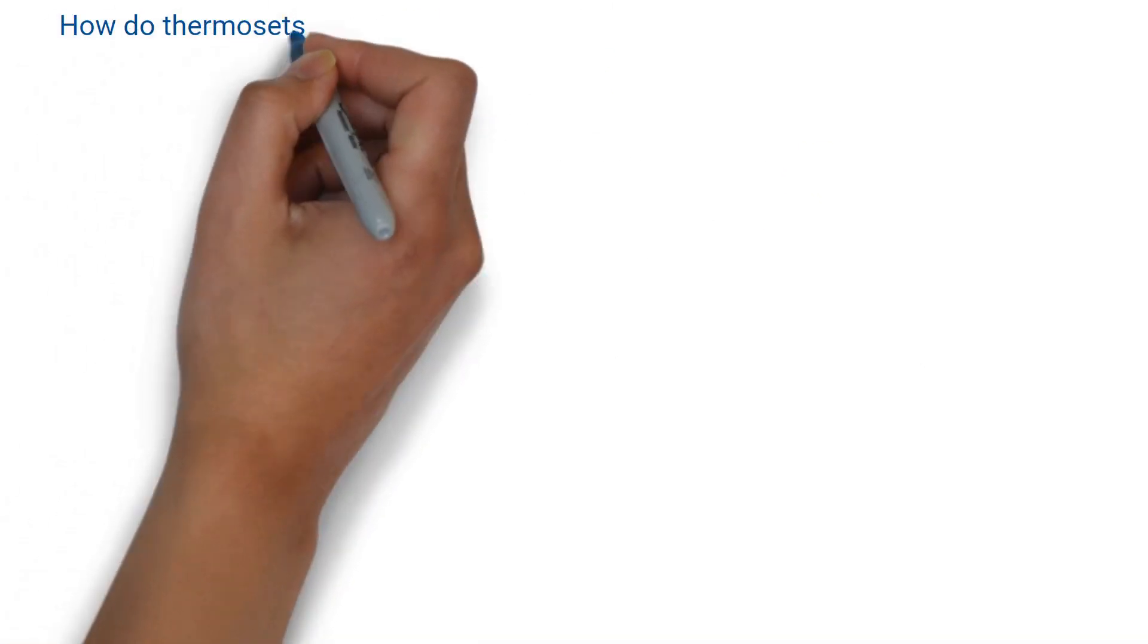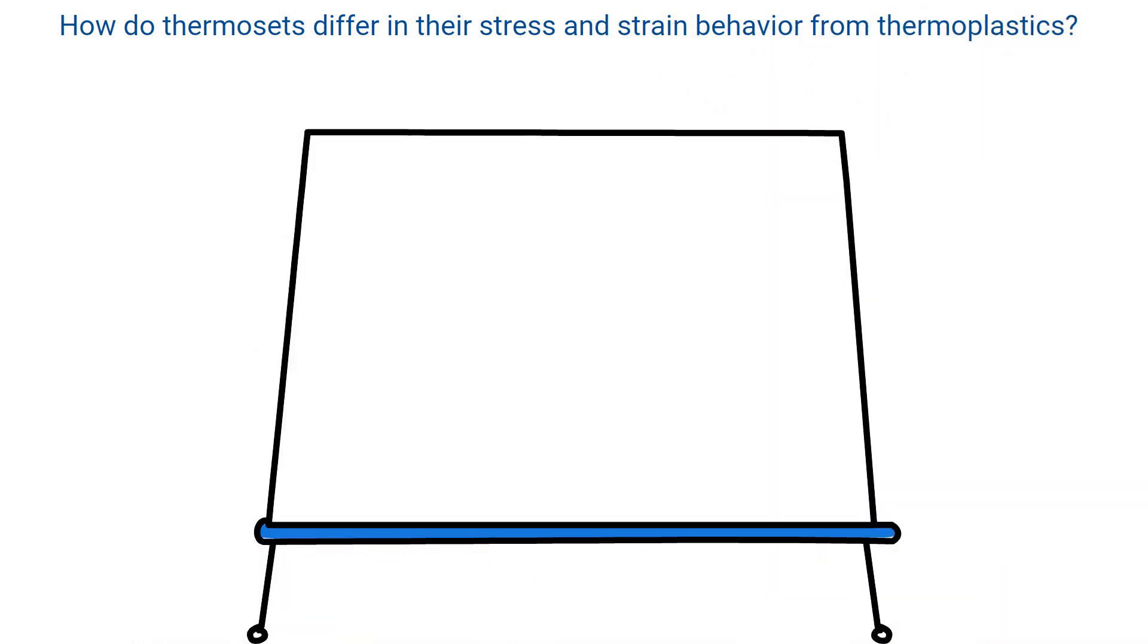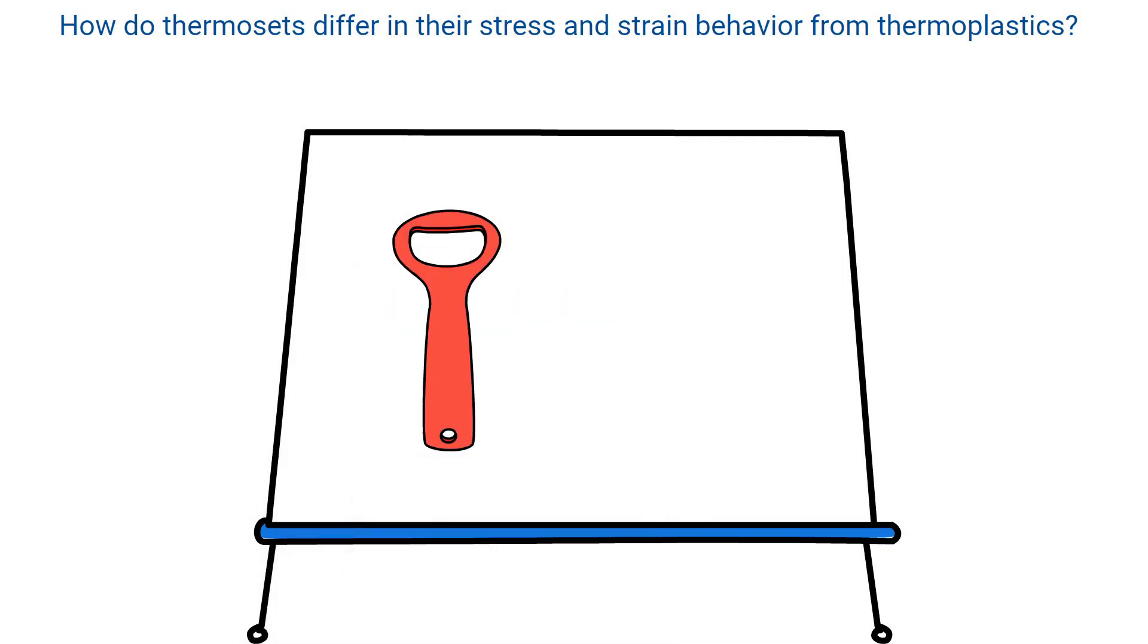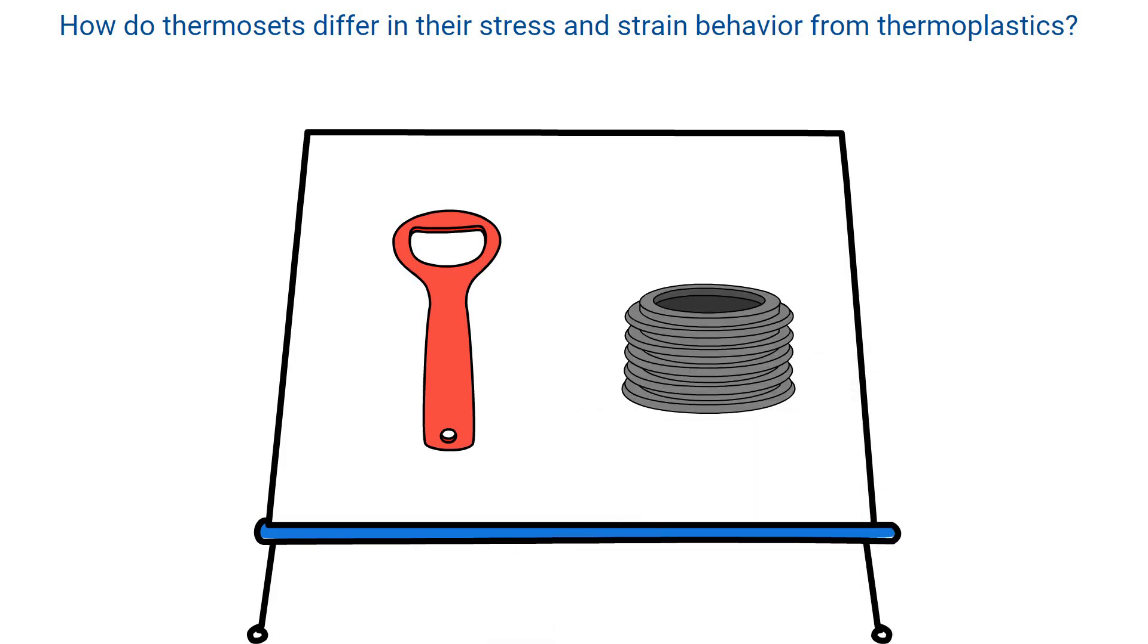We might then ask, how do thermosets differ in their stress and strain behavior from thermoplastics? To find that out, we compare two different thermosets, a 3D printed bottle opener which is hard, rigid and strong, and a 3D printed gasket which is soft and flexible.